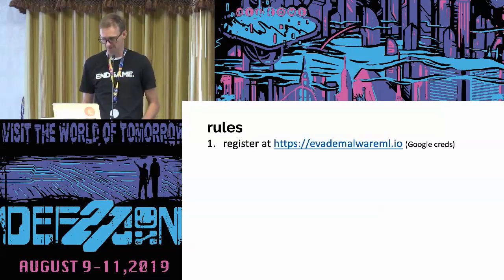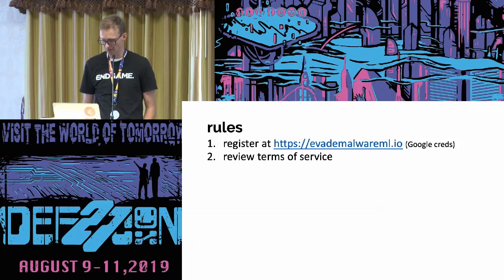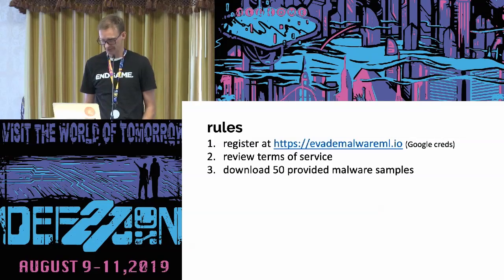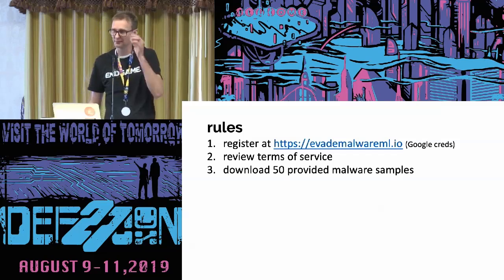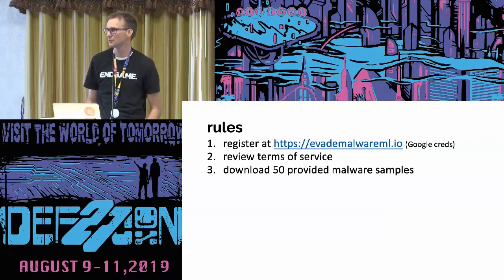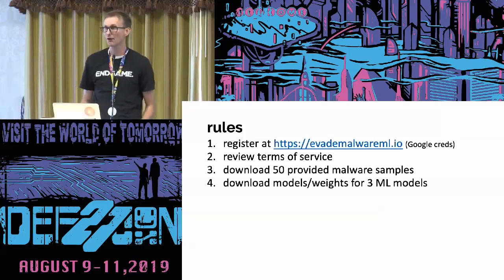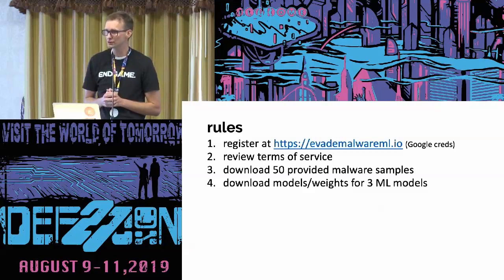The rules, briefly. Step one: you will need Google credentials to register at evademalwareml.io. Once registered, you will agree to simple terms of service that essentially say this is real malware, please be careful, and any malware you create is your creation and you're responsible for it. You will download 50 malware samples representing popular families over the last 12 to 18 months, including those that have targeted financial industries. You may also download a full description of three completely open source machine learning models.